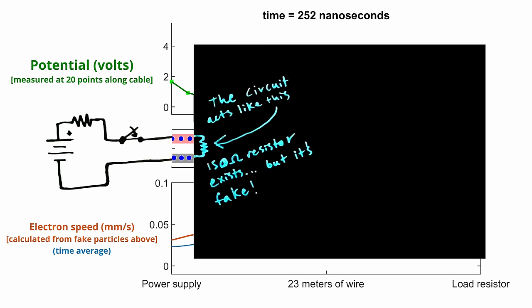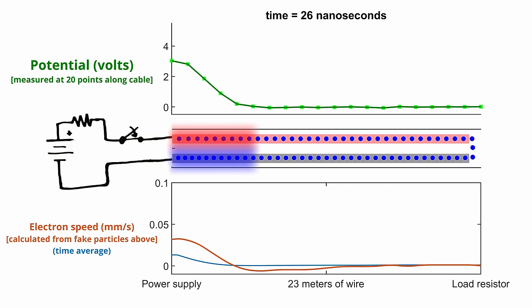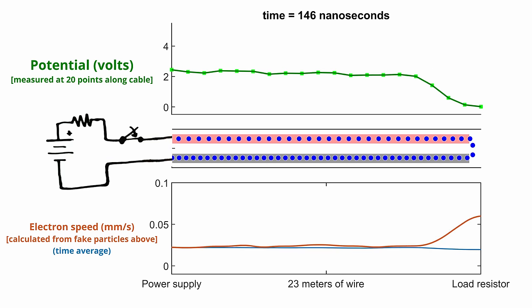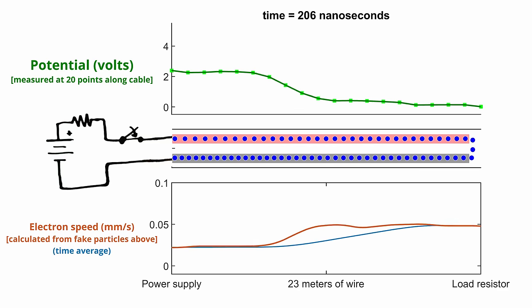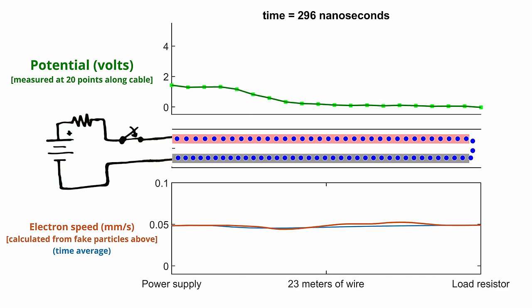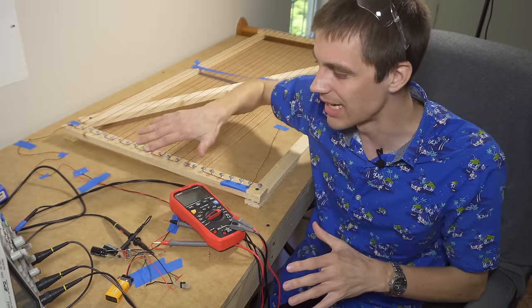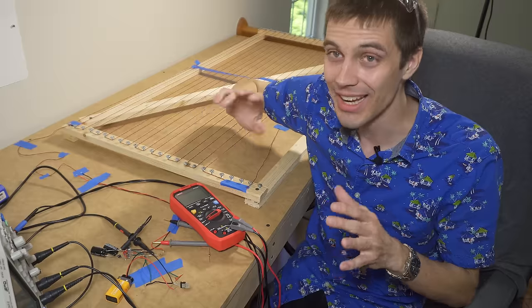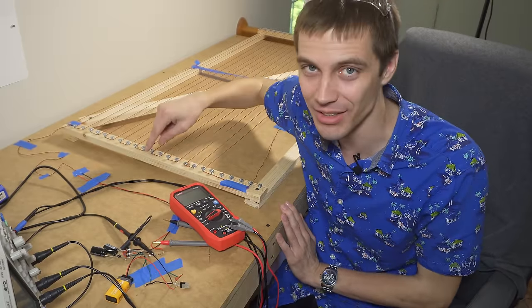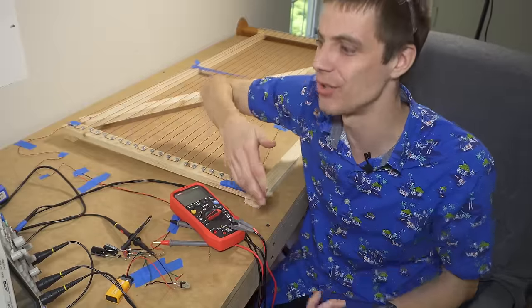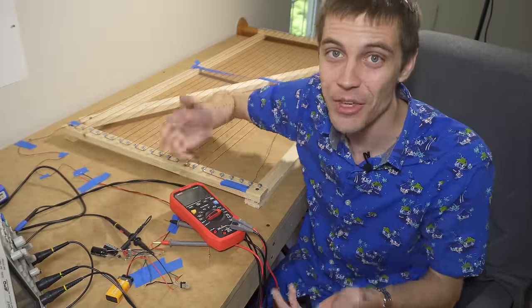If we cover this up, if we sort of treat the transmission line as a black box, we see that we're pulling electrons from this wire and electrons start moving into this wire. It looks like they're connected. It looks like there's an electric current flowing through this gap, but there's not. We're just piling up charge on both sides and storing a bunch of energy in the electric field between the wires. And if you do the math, it looks like they're connected by a 150 ohm resistor. That's why we can make this substitution.